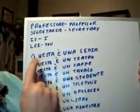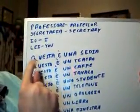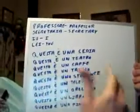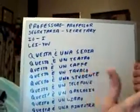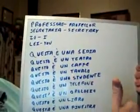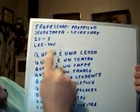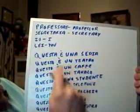Now, do you remember in the last lesson when I told you to pair up the nouns with the word questa, which means 'this'? We're gonna go through some examples here. If I've missed something you can just follow what I've done and figure it out for yourself. Questa è una sedia.